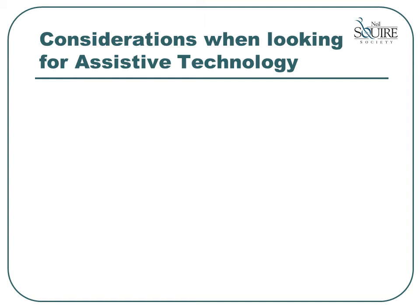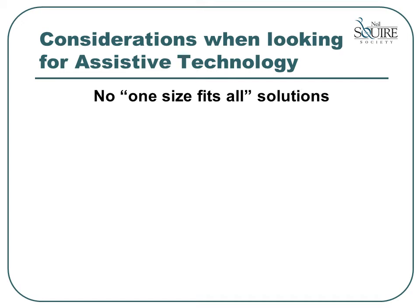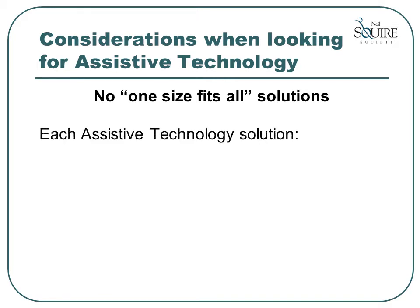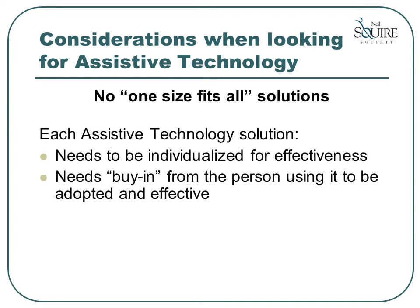Before we move to the actual technology, we need to discuss the things which must be taken into consideration when looking for assistive technology for an individual. The key element to remember is that there is no one-size-fits-all solution. Even individuals who have been diagnosed with the same disability may need very different assistive technology solutions. Each assistive technology solution needs to be individualized for effectiveness. It needs buy-in from the person using it to be adopted and effective, which means you need to be involved in the decision-making right from the very beginning of the selection process.